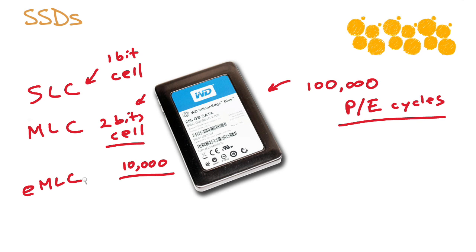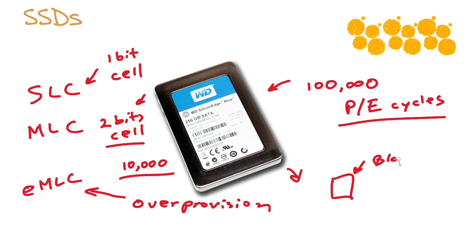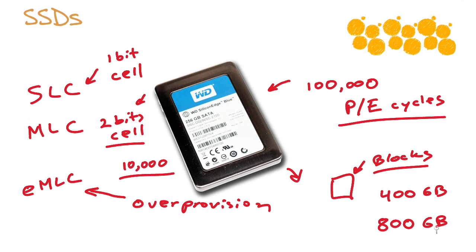There's also enterprise multi-level cell technology. What enterprise multi-level cell technology does is really super over-provision the drive. Over-provisioning means it is hiding a lot of blocks, and these additional hidden blocks allow for very fast writing time. So you might see a 400-gigabyte drive where there's actually 800 gigabytes involved — 400 gigs are being hidden, allowing for this over-provisioning for a very high-performance, highly reliable disk structure.